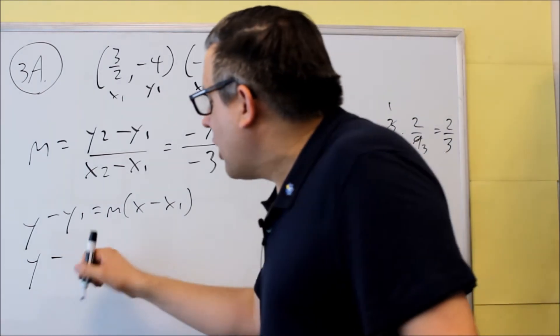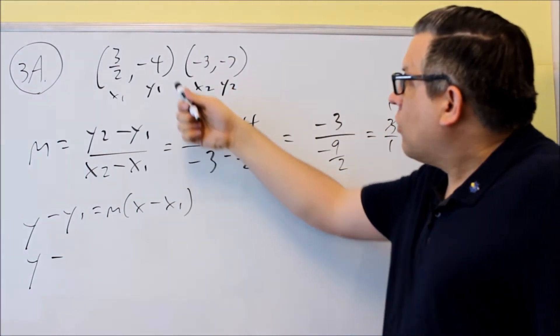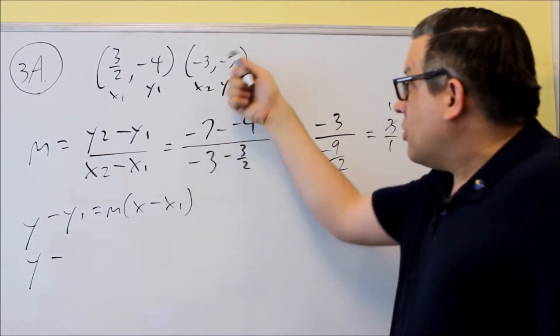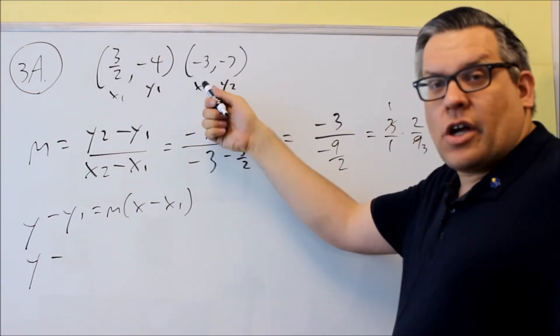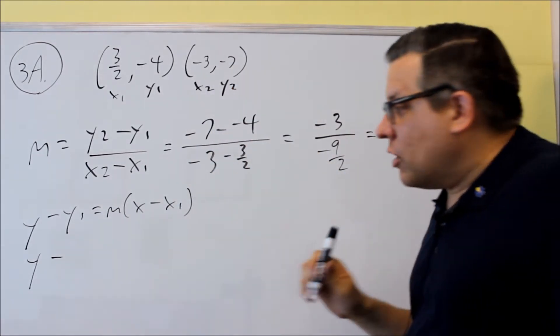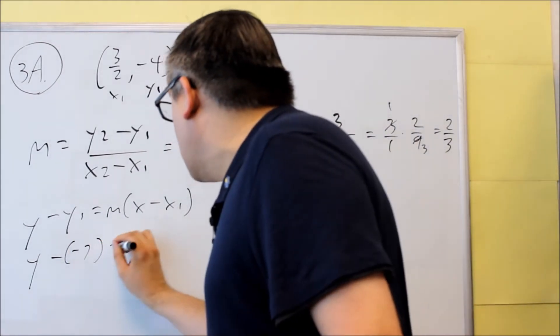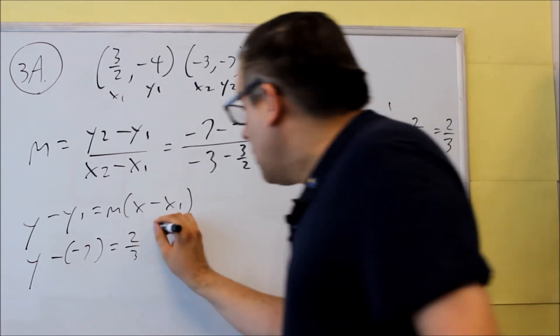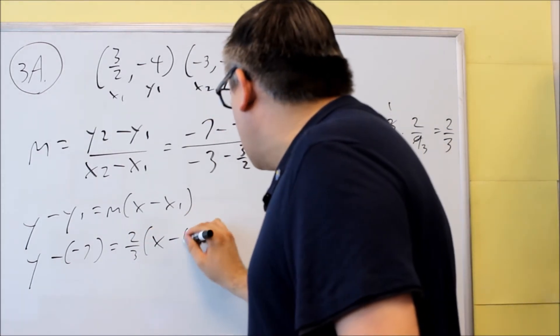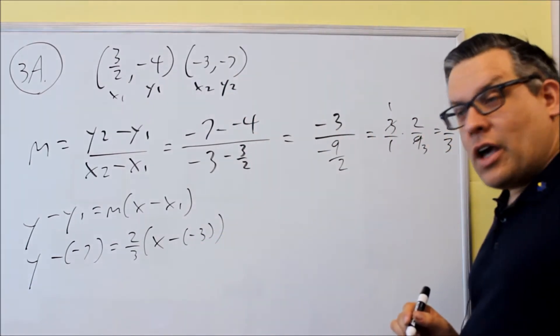So for this one here, we've got to put in y1, y1. We're actually using this point instead. So we're going to say that, for this equation, negative 3 is our x1 and negative 7 is our y1. So we're going to put negative 7 in here. We have the 2 thirds, that's our slope. x minus x1, x minus negative 3, that's going to look like that.